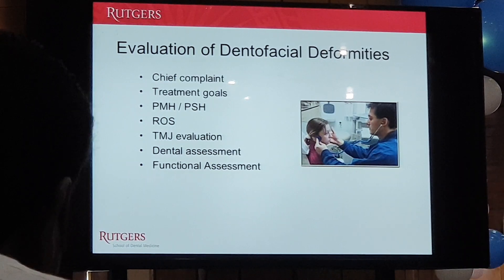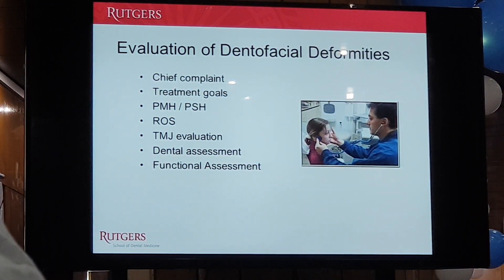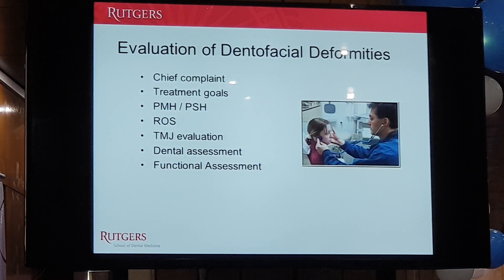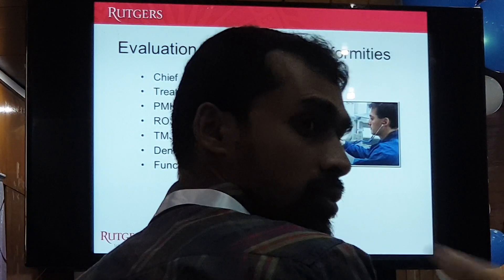Evaluation of a patient with dental facial deformities: as with anything else, you have to interview the patient — find out why they're here, their medical history, surgical history, and what their goals are. It's very important, especially when doing complicated elective surgery. Unlike oncology surgery, orthognathic surgery is not done to save a life, so it's important that the patient, surgeon, and family are all on the same page with no surprises. You have to spend time understanding their expectations.